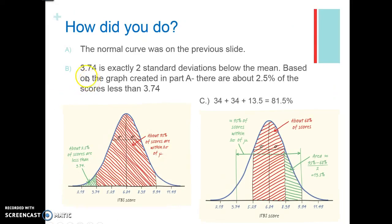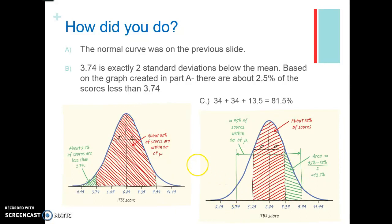We knew that 3.74 was exactly two standard deviations below the mean, so that area is about 2.5%. For the other question, drawing your curve and adding up: 34% plus 34% plus 13.5% gives you 81.5%. Know what the empirical rule is and how to apply it across three standard deviations, breaking down your percentages accordingly.